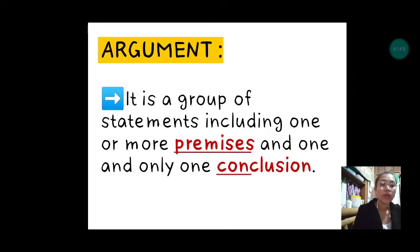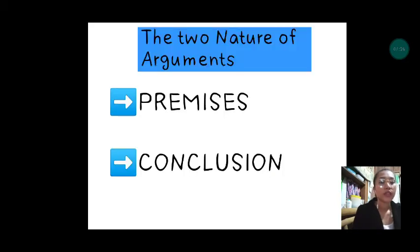In one problem we can have many reasons to support or prove and to come up with one and only one conclusion. Take note that in one argument we can only have one conclusion. Let's understand what premises and conclusion are in an argument. These two words, premises and conclusion, are the two natures of an argument.